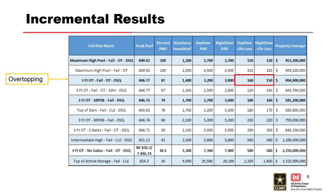Over-topping — three foot of over-topping failure event. These are incremental results. We see 160 during the day, 150 at night. For a breach prior to over-topping event — same project — life loss increases about a full order of magnitude. Why would incremental life loss be higher in a situation where the reservoir level is more than 20 feet lower and we're sending less water downstream? Unexpected — if the population knows the load's going to over-top, they're going to self-activate. So early warning because we know the dam's going to over-top.